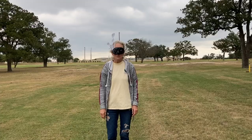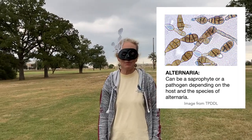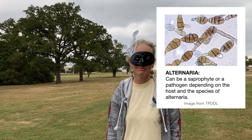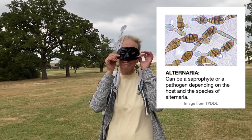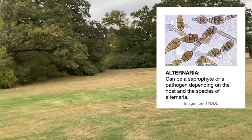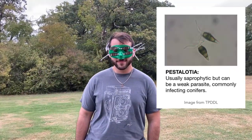They include fungi like Rhizopus, Alternaria, Pestelotia, and Tetraploa. These fungi aren't likely to be the causal pathogen on your sample, and they make it difficult for the lab to diagnose what's really causing your plant's decline.